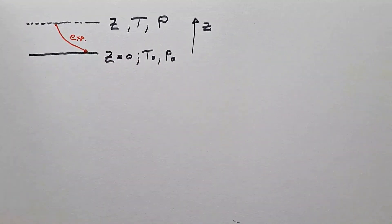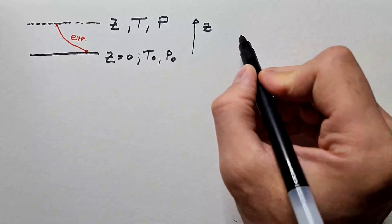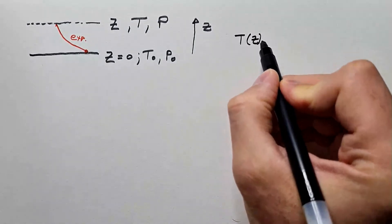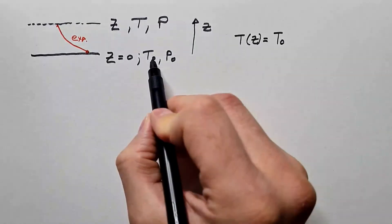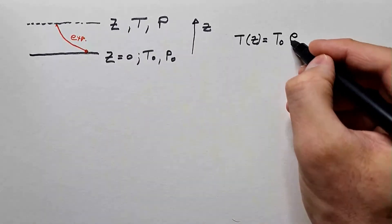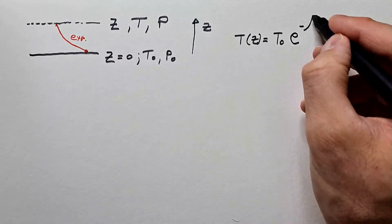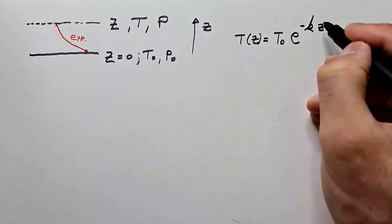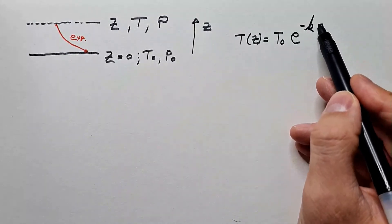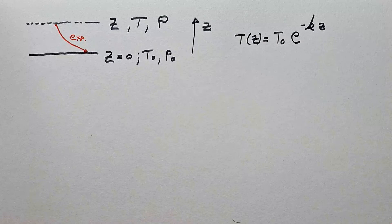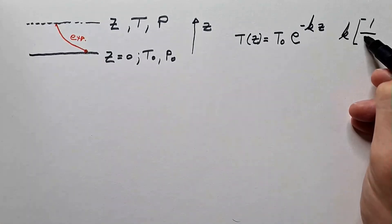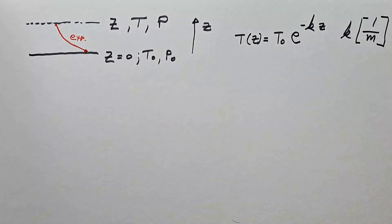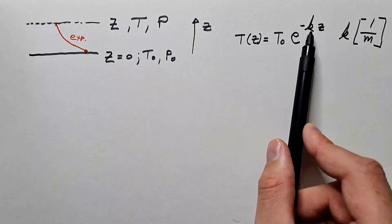Now, what would be a general expression for some exponential decrease? Well, we would say that temperature as a function of height has a form T0, it starts from surface value, and then exponentially decreases minus KZ. Minus KZ because it decreases with height Z, and minus K is the scale factor. And you can see that this scale factor has to have units of 1 over m in order to have unitless quantity in the exponent.